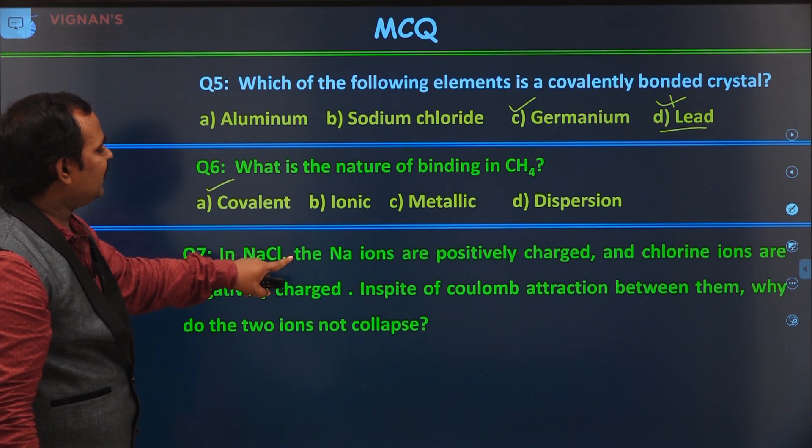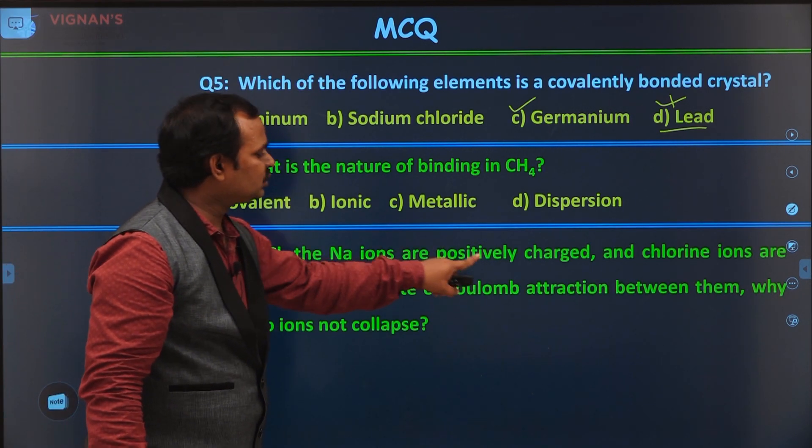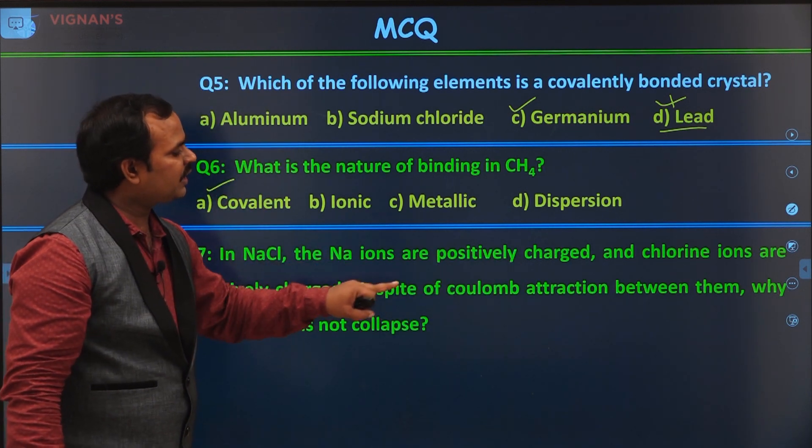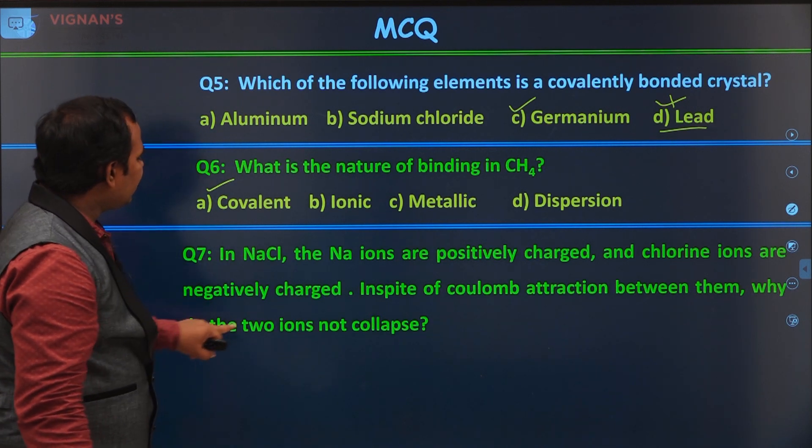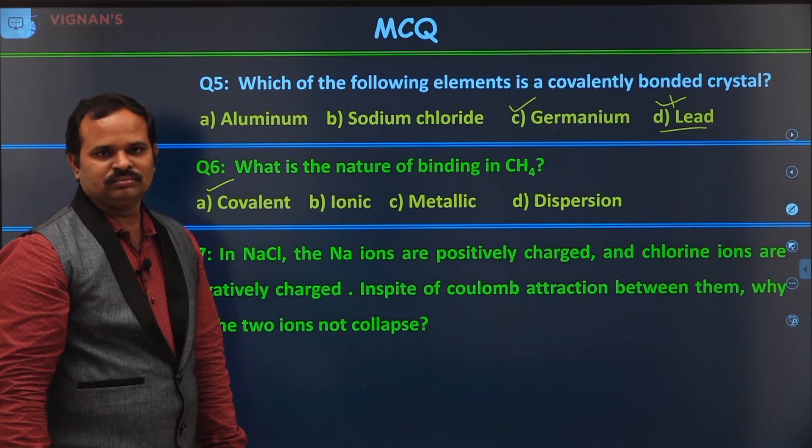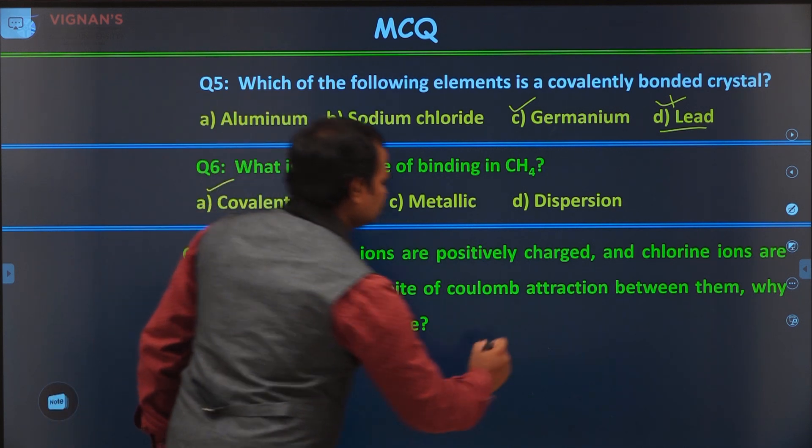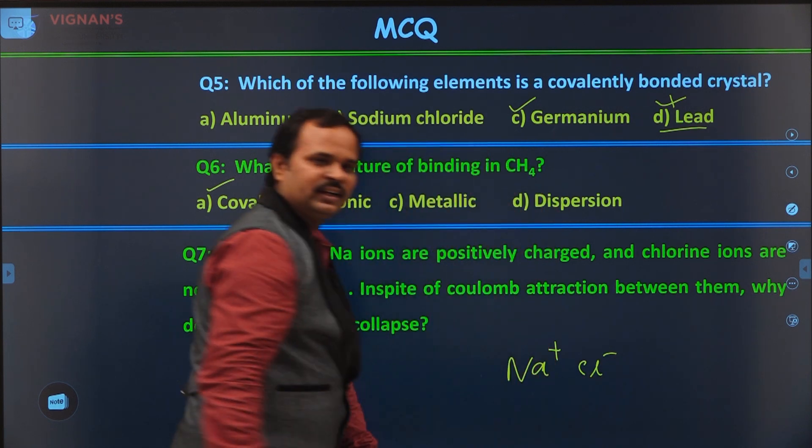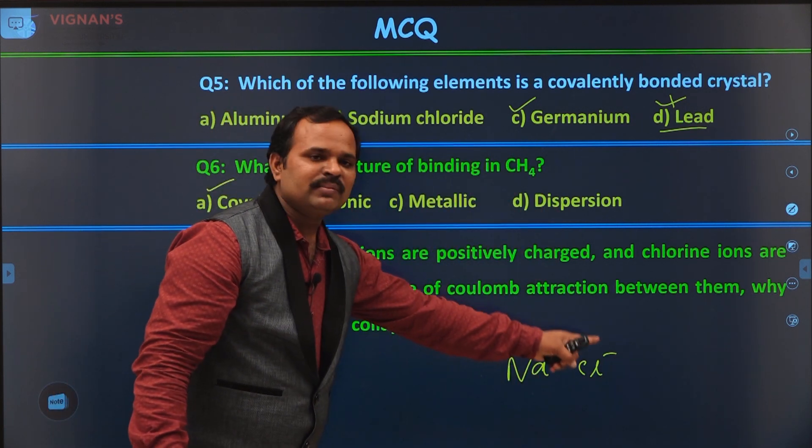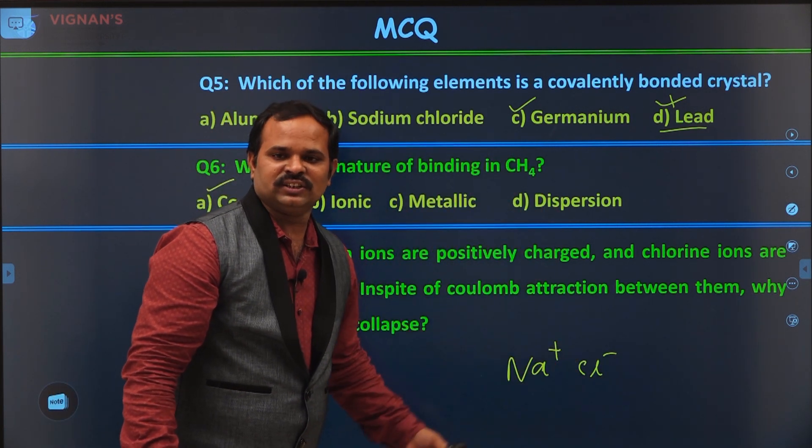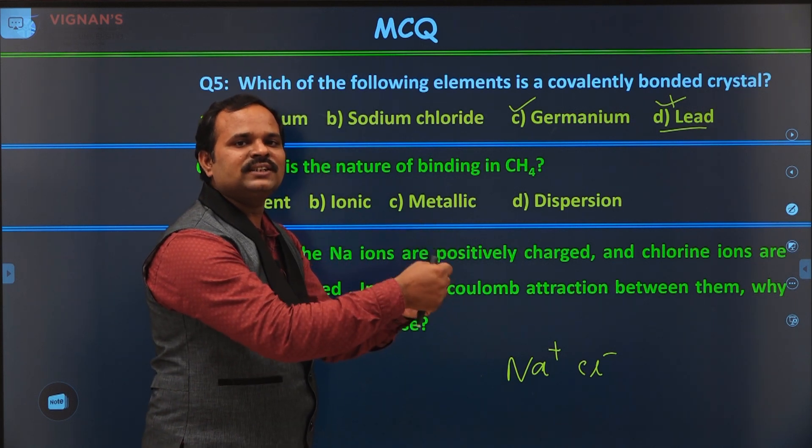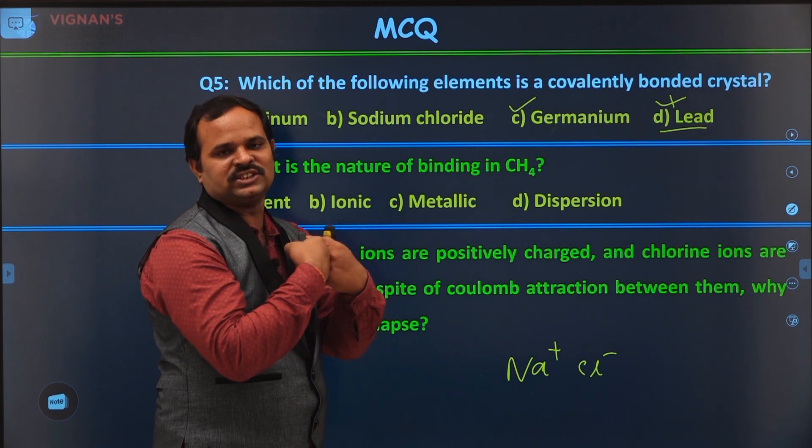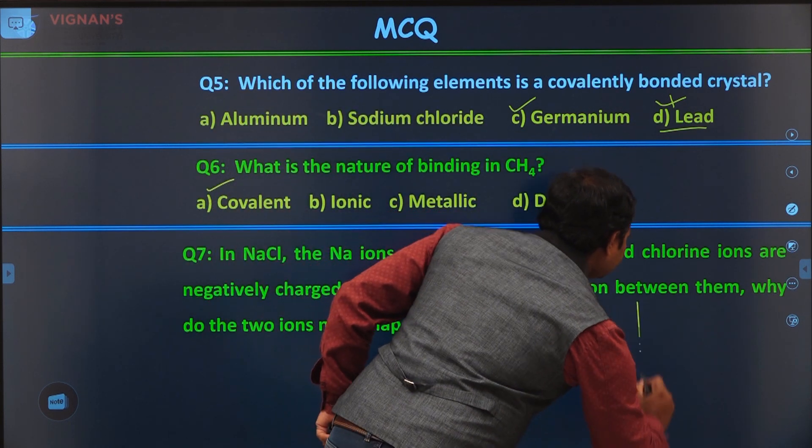In NaCl, the sodium ions are positively charged and the chlorine ions are negatively charged. In spite of the coulomb attraction between them, why do the two ions not collapse? The question is, there are sodium plus ions and chlorine minus ions. There is a plus charge and minus charge. They both are attracting each other.